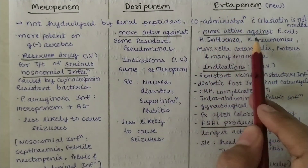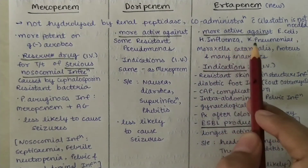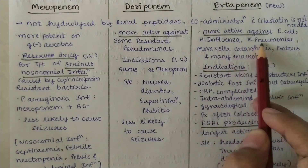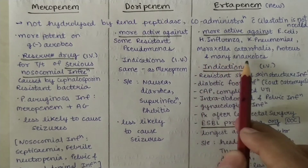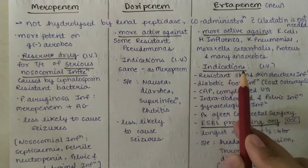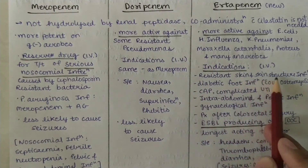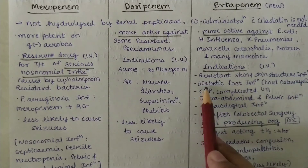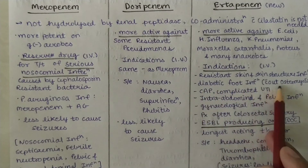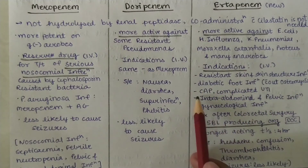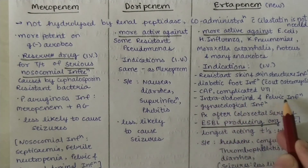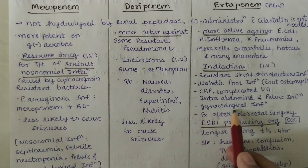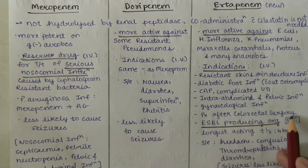Next, Ertapenem. It is more active against E. coli, H. influenzae, K. pneumoniae, Moraxella catarrhalis, Proteus, and many anaerobes. Indications: resistant skin and skin structure infections, diabetic foot infections without osteomyelitis, community-acquired pneumonia (CAP), complicated UTI, intra-abdominal and pelvic infections, gynecological infections, and prophylaxis after colorectal surgery.